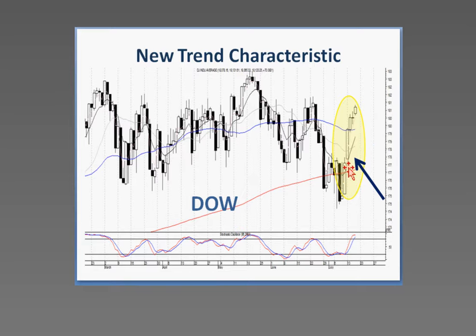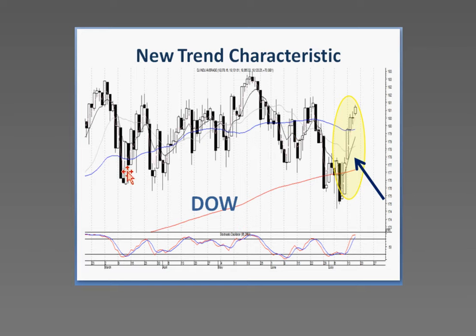As we can see, there's been one, two, three, four days in a row where the market has just gone straight up. We've had uptrends before, but notice the nature of those uptrends — up day, down day, up day, down day — very indecisive trading. This is becoming very decisive.